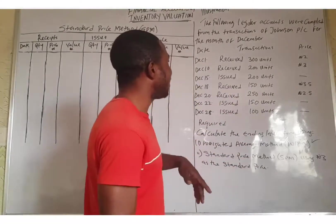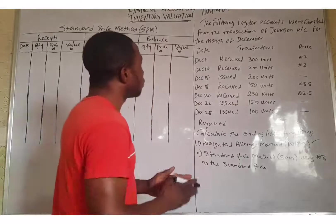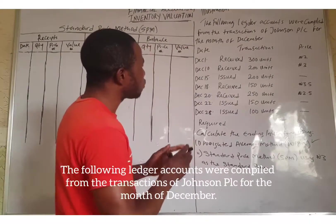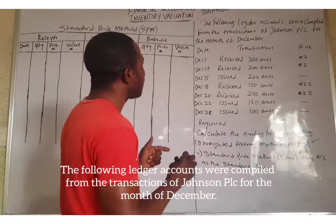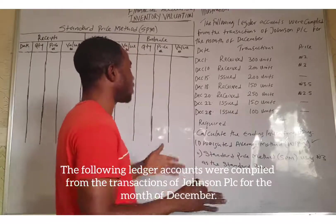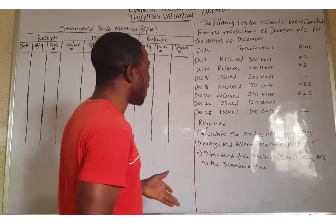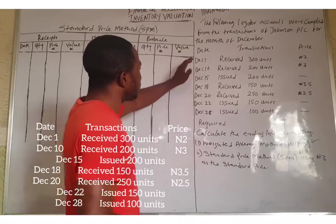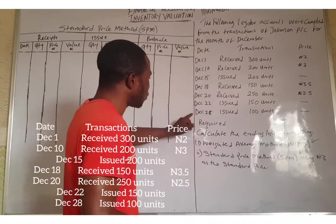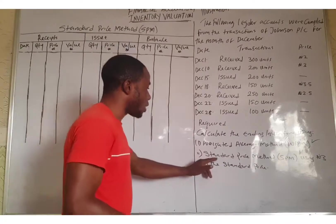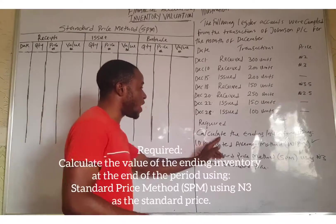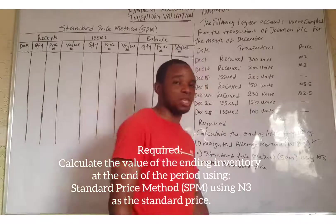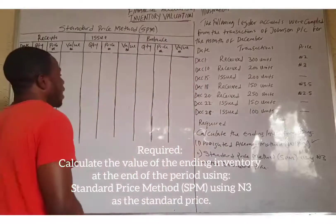Now let's look at the illustration. The following ledger accounts were compiled from the transactions of JC PLC for the month of December. We have transactions from December 1 to December 28. We want to value the closing inventory using the standard price method. Let's start one after the other.